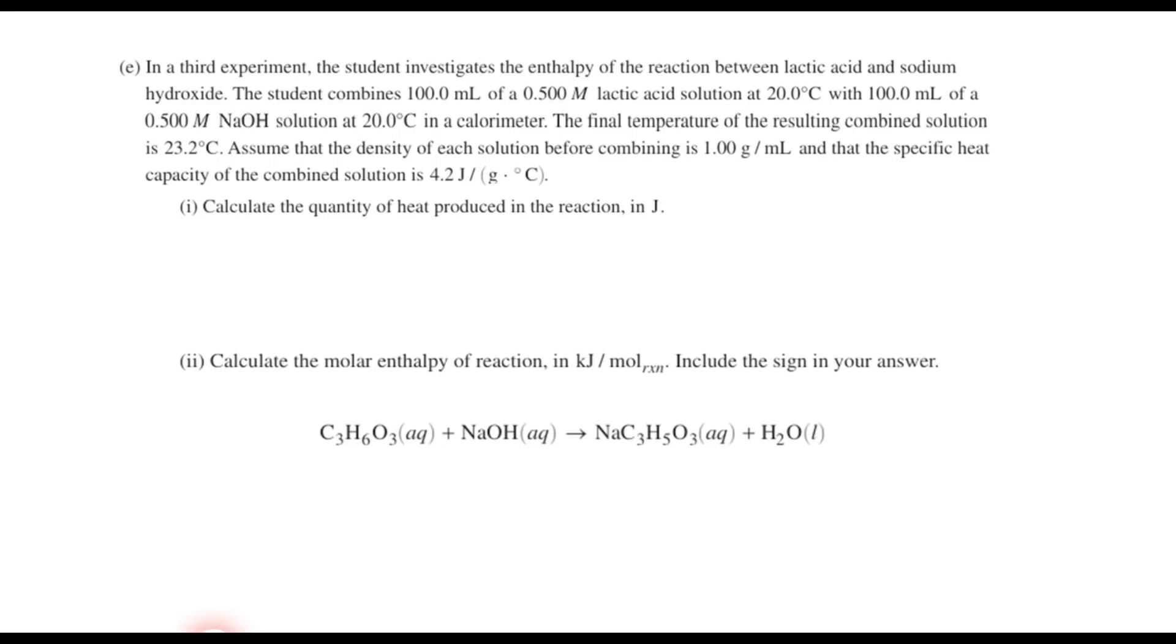Now we have another experiment. But this time we have the enthalpy. This is going to be a calorimetry experiment where the student investigates the enthalpy of a reaction between lactic acid and sodium hydroxide. The student combines 100 milliliters of a 0.5 molar lactic acid solution at 20 degrees Celsius with 100 milliliters of a 0.5 molar sodium hydroxide solution at 20 degrees Celsius in a calorimeter. The final temperature of the resulting combined solution is 23.2 degrees Celsius. Assume that the density of each solution before combining is 1 gram per milliliter and that the specific heat capacity of the combined solution is 4.2 joules per gram degree Celsius. And part one says calculate the quantity of heat produced in the reaction in joules or heat released in the reaction, we should say more correctly.